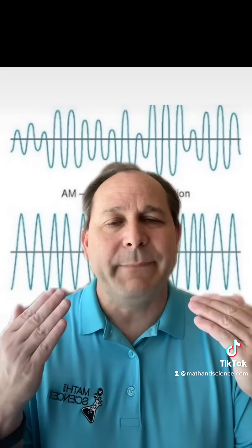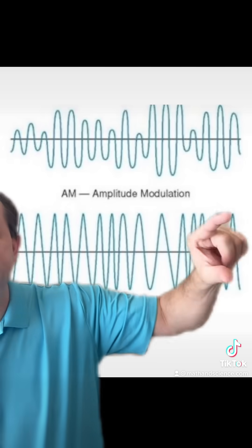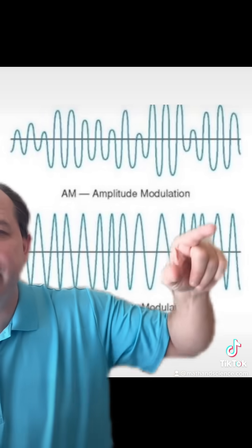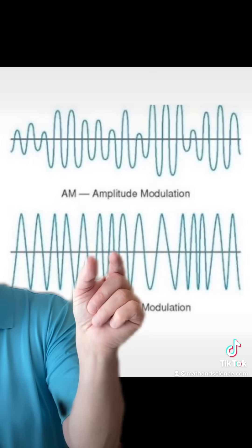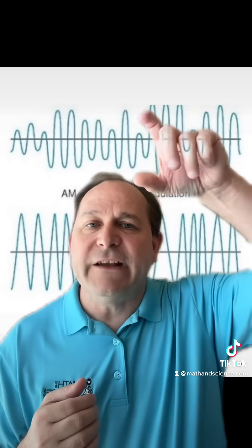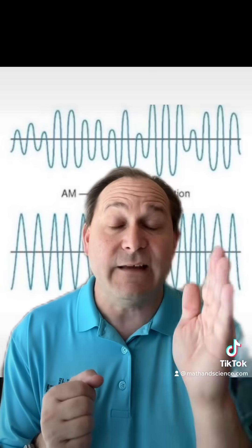Frequency modulation actually sounds a lot better, but it carries the information not in the changes of the amplitude. Notice the wave is the same height all the time, but in frequency modulation the frequency changes. Here we have a low frequency and over here a higher frequency. So in the AM case, when I talk louder or quieter, it changes the height of the wave. But in FM, as I talk louder or quieter, it slightly shifts the frequency in time, in lockstep with the actual voice you're trying to transmit. That's how the information is carried differently.